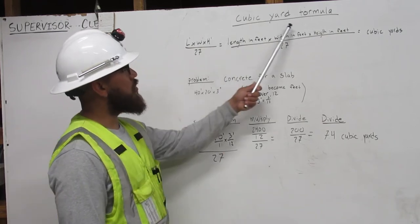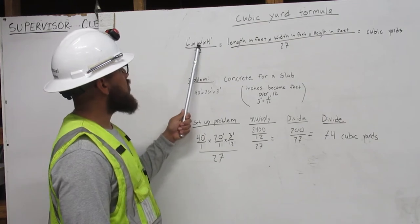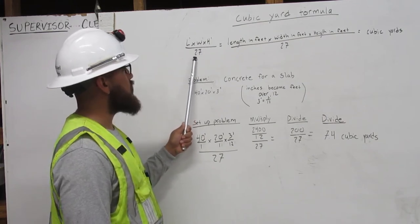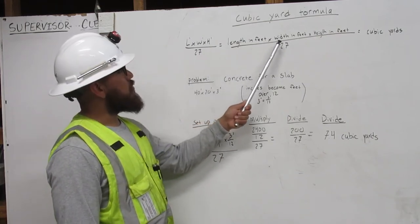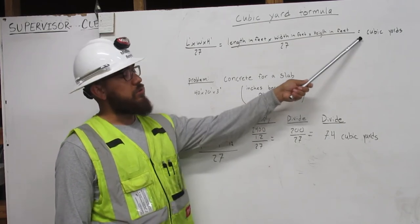Let me show you. Cubic yard formula. Length in feet times width in feet times height in feet over 27. Length in feet times width in feet times height in feet over 27 equals cubic yards.